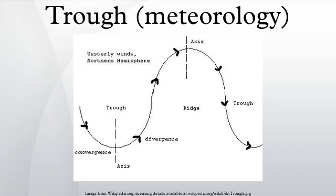In addition to standard troughs, some may be described further with a qualifying term indicating a specific or a set of characteristics. An inverted trough is an atmospheric trough which is oriented opposite to most troughs of the mid-latitudes. Most inverted troughs are tropical waves. Most troughs of low pressure in the mid-latitudes of the northern hemisphere are characterized by decreasing atmospheric pressure from south to north, while inverted troughs are characterized by decreasing pressure from north to south. The situation is opposite in the southern hemisphere. Inverted troughs in both hemispheres move to the west from the east, while mid-latitude troughs generally move with the westerlies toward the east.